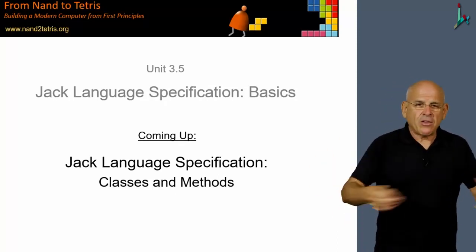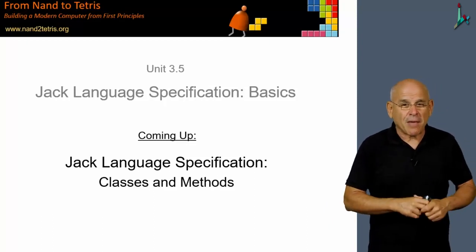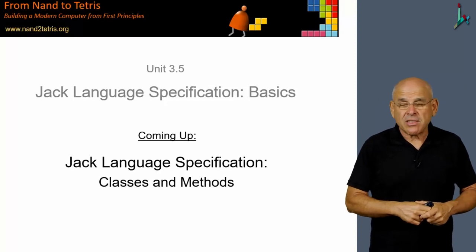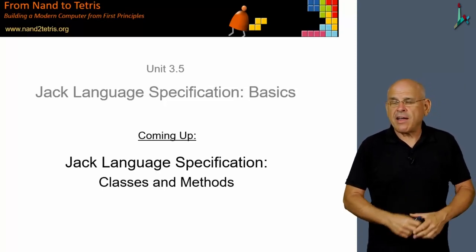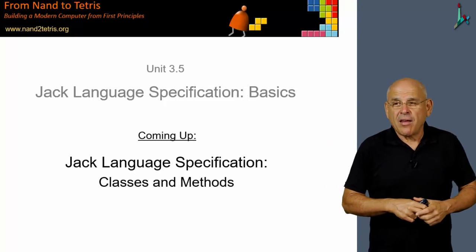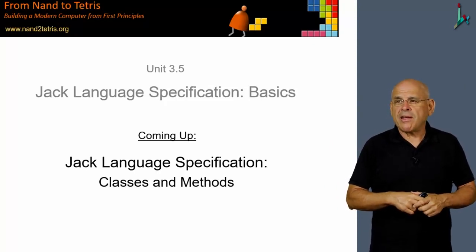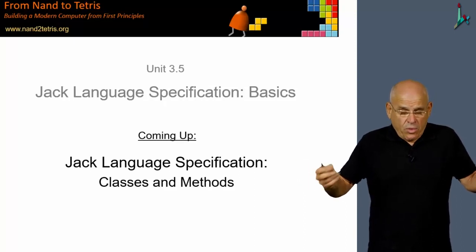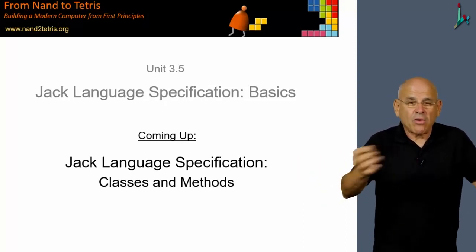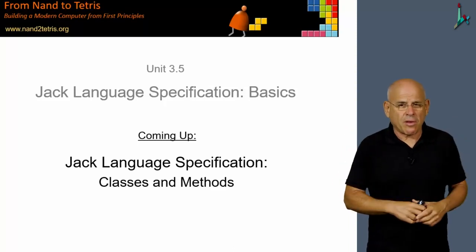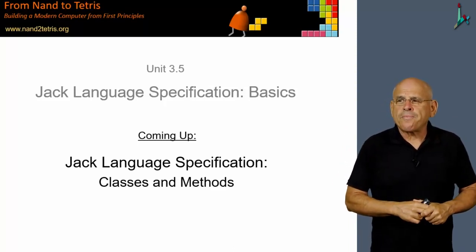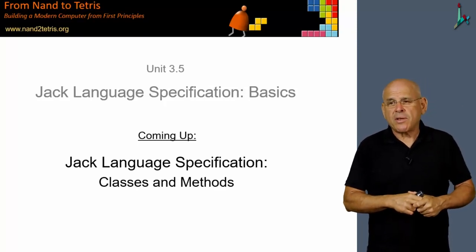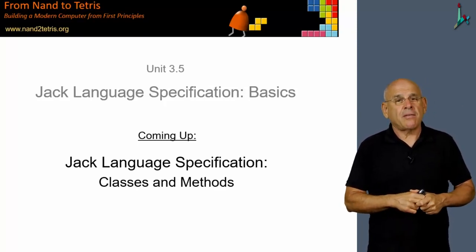Any variable can be assigned to any variable irrespective of its type. And on the one hand, this sounds like chaos. On the other hand, it provides some very interesting hacking possibilities that we will definitely use later on. We could easily impose all sorts of restrictions and not allow to do certain things, but we decided not to bother about it. So this is the Jack type system. And in the next unit, we'll turn to discuss classes and methods.